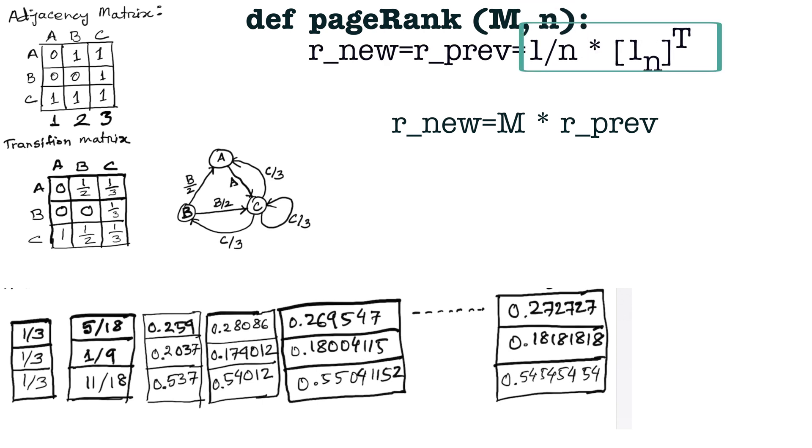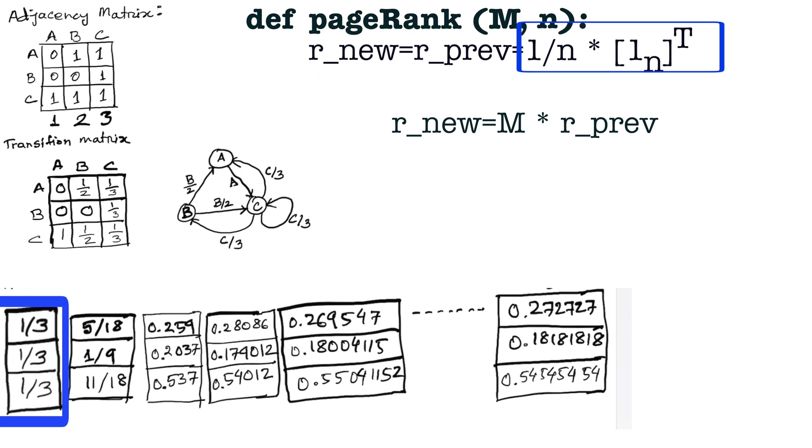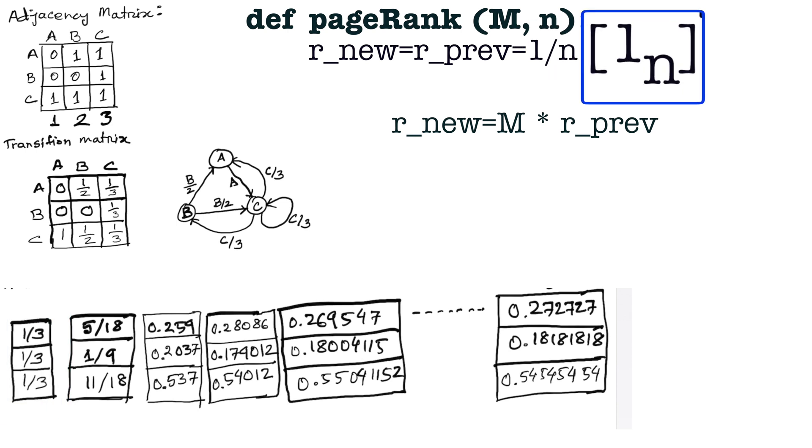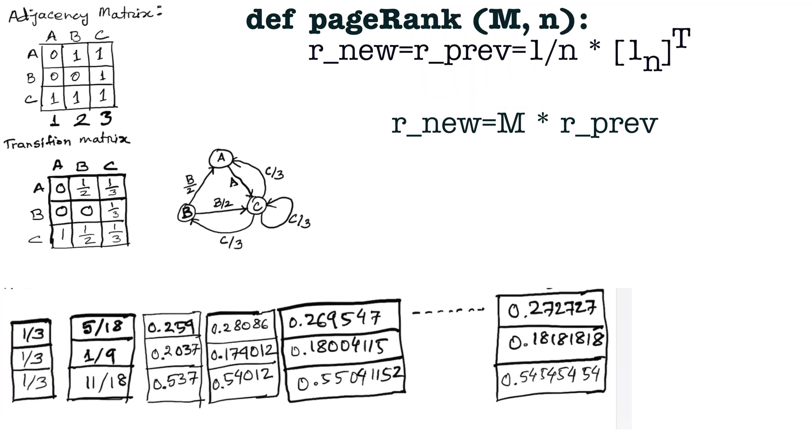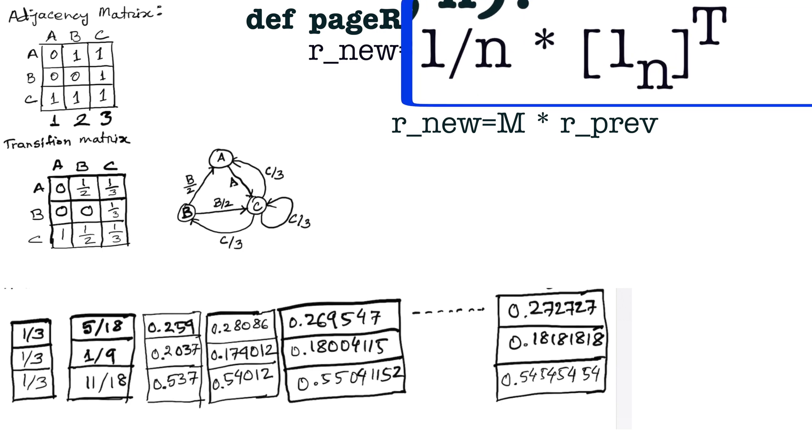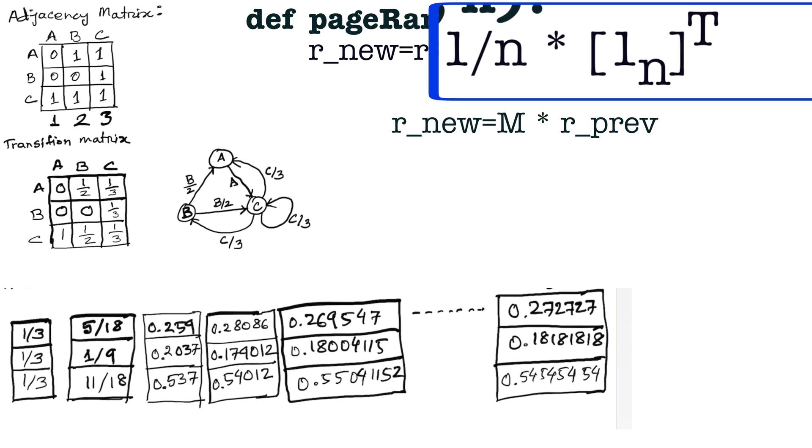Notice that our initialization is a column vector with values equal to one over n, where n is the number of websites. In the beginning, r_new and r_prev will be such a uniform column vector that sums up to one. We create a row vector that has all ones, then we transpose the row vector so that it becomes a column vector, then we multiply it by one over n, making all the elements of the vector one over n. This is a column vector which contains all uniform values that sum up to one.